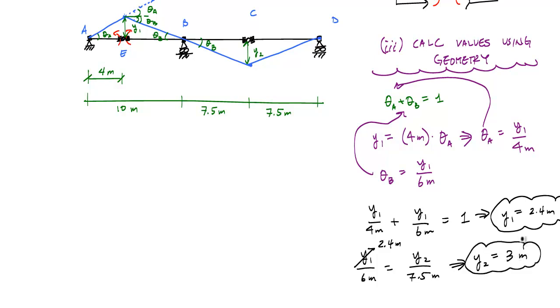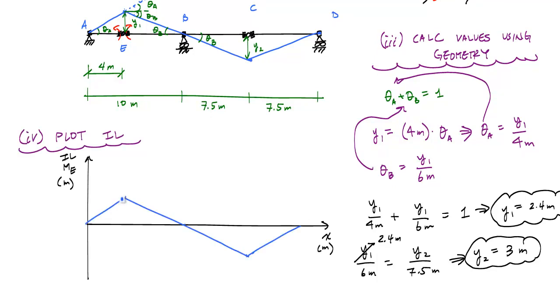I have values that I need for my influence line graph, and I'm just going to go ahead and replot it. And there's my influence line for the internal moment at E with a unit concentrated force that's moving across this beam structure.